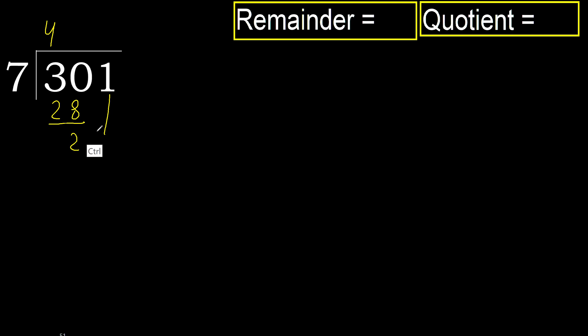Next: bring down to get 21. 7 multiplied by 3 is 21, which is not greater. Subtract.